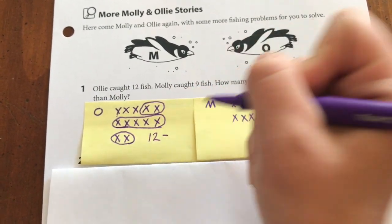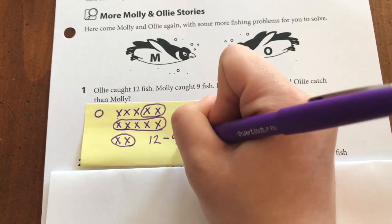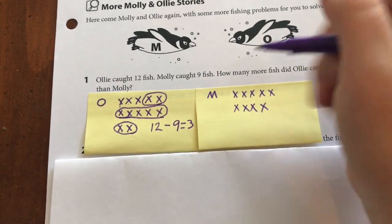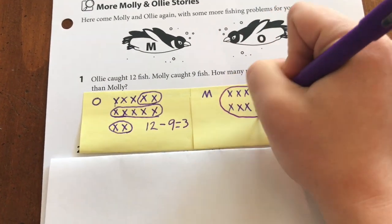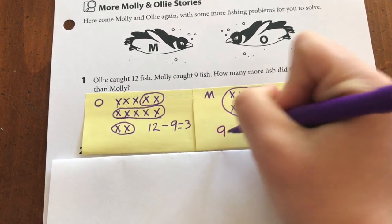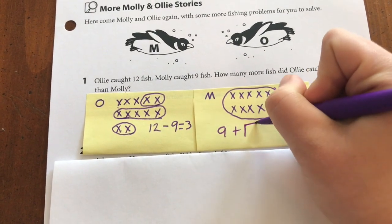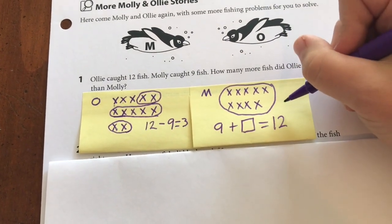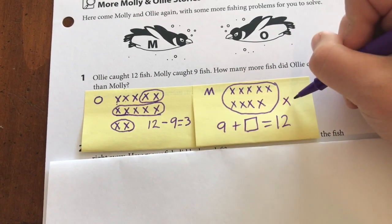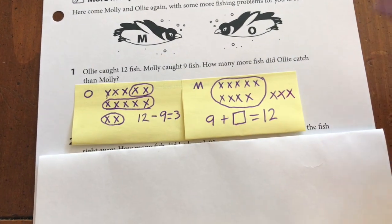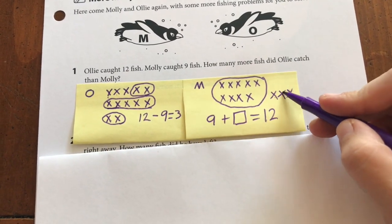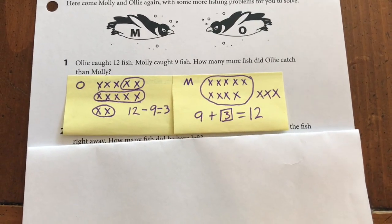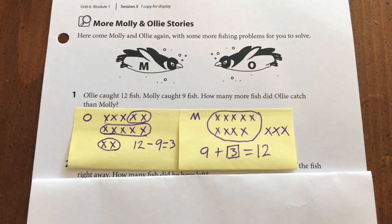So then my subtraction problem would be 12 minus 9 equals 3. The other way we could have done it is: Molly has 9, so she has 9 plus a number equals 12. We know Molly has 9, and then we figure out how many more Ollie has — 9, 10, 11, 12 — so 9 plus 3 equals 12. Either way is correct. Nice job getting that hard one done.